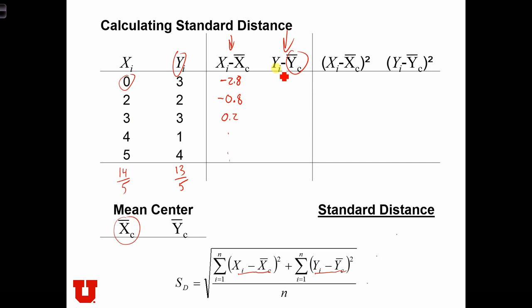We can do the y's as well. We have 13 over 5, which is 2 and 3 fifths, which is 2.6. We have 3 minus 2.6, which is 0.4. 2 minus 2.6 is minus 0.6, and so on.